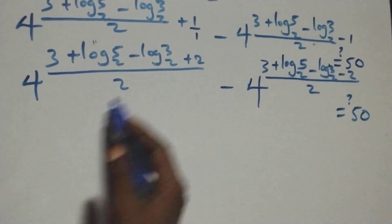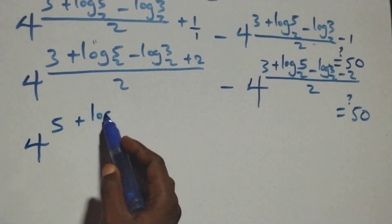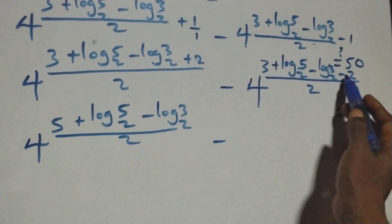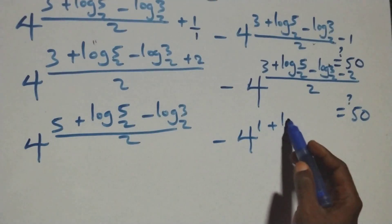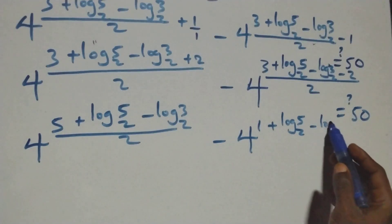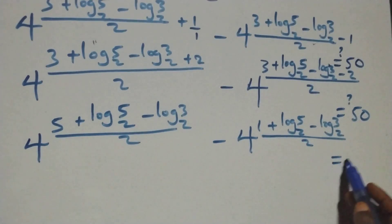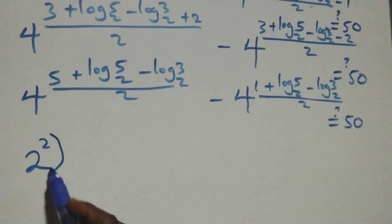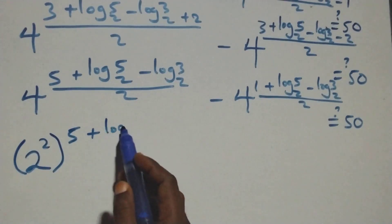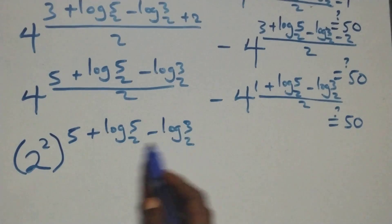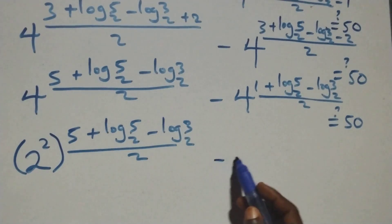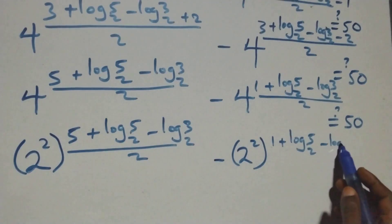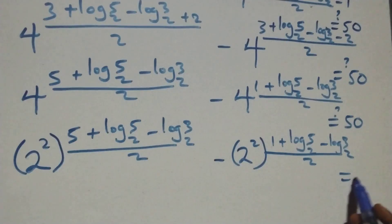At this here we have 3 plus 2 = 5. So this is 4 raised to power (5 plus log 5 base 2 minus log 3 base 2) all over 2, then minus — also we have 3 minus 2 = 1 — that is 4 raised to power (1 plus log 5 base 2 minus log 3 base 2) all over 2. Then also 2 squared raised to power (1 plus log 5 base 2 minus log 3 base 2) all over 2. This is equal to 50 on this side.